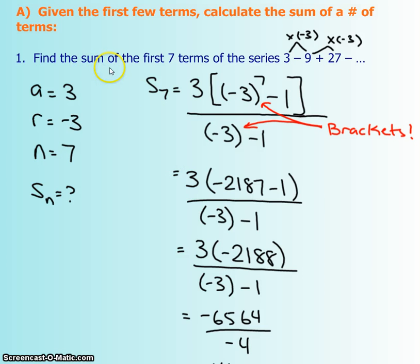So they want you to find the sum of the first seven terms and they've given you a geometric series. We know that it's a geometric series because each of the terms is multiplying by the same number each time, instead of an addition, which would be an arithmetic. Your r is going to be this guy right here. Our first term is 3 and then since they said they wanted the sum of the first 7, n is going to be 7.